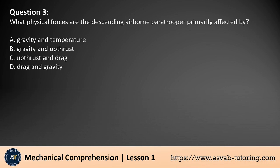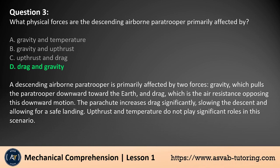Question 3. What physical forces are the descending airborne paratrooper primarily affected by? A. Gravity and temperature, B. Gravity and upthrust, C. Upthrust and drag, D. Drag and gravity. The answer is D. A descending airborne paratrooper is primarily affected by two forces: gravity, which pulls the paratrooper downward toward the earth, and drag, which is the air resistance opposing this downward motion. The parachute increases drag significantly, slowing the descent and allowing for a safe landing. Upthrust and temperature do not play significant roles in this scenario.